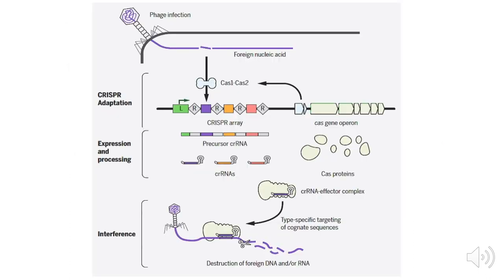In bacteria, CRISPR works in three stages. When a lysogenic bacteriophage first affects a host, bacteria incorporates the phage DNA into a part of the genome known as the CRISPR array. The CRISPR array is composed of the repeat sequences that Mojica first discovered, separated by spacers. This initial exposure is analogous to a human receiving a vaccine.